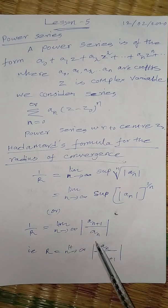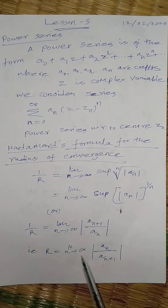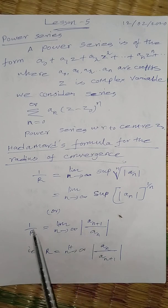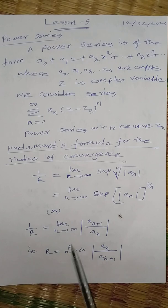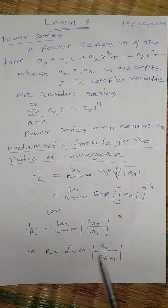Or you can use the formula 1 by r which is equal to limit n tends to infinity modulus of An plus 1 by An. That is, r is equal to limit n tends to infinity modulus of An divided by An plus 1.